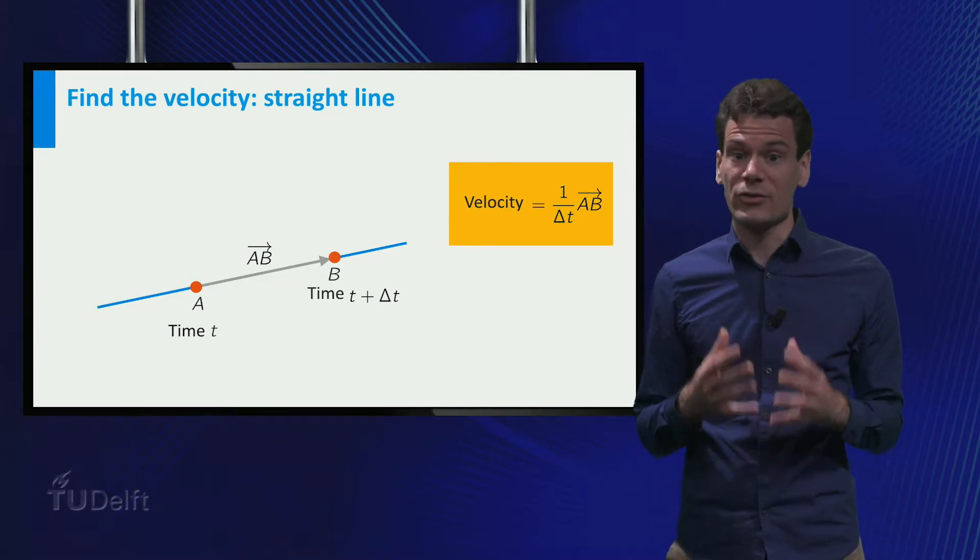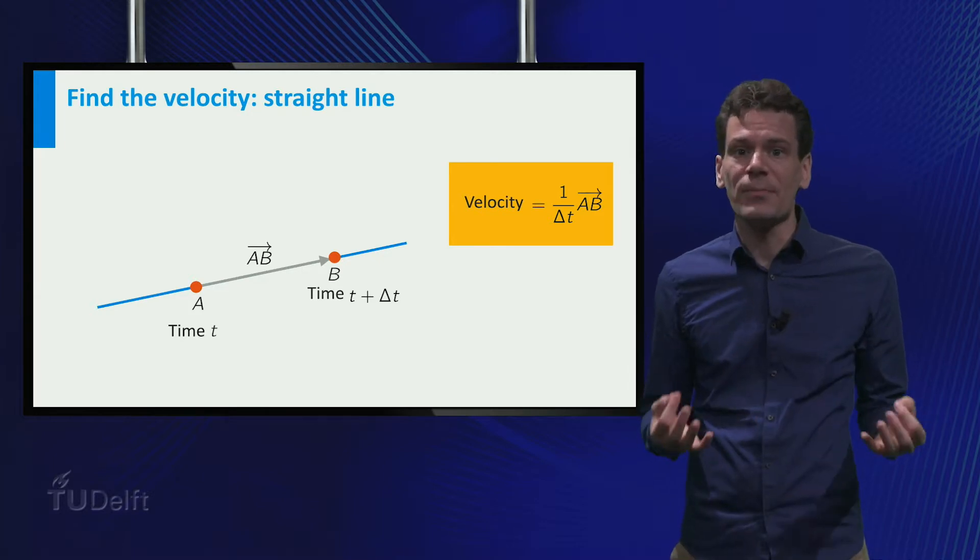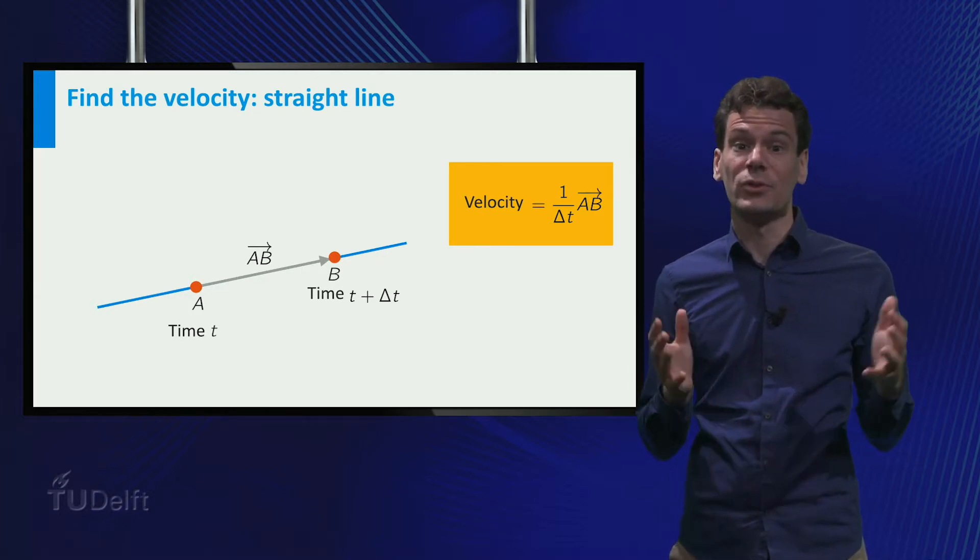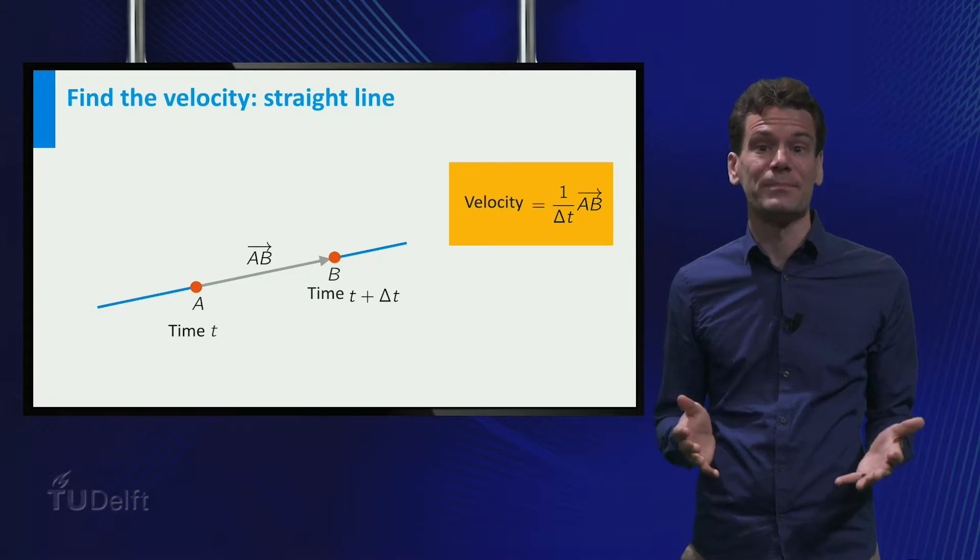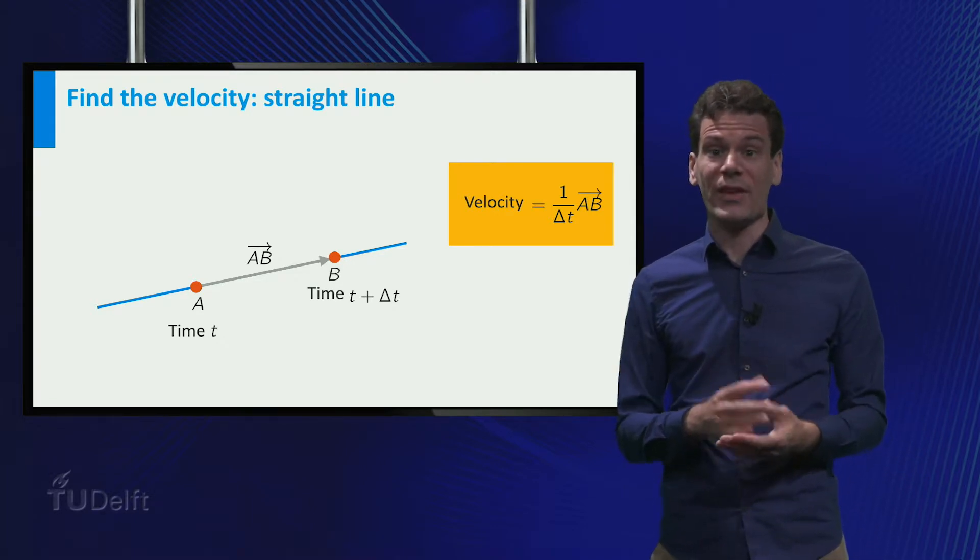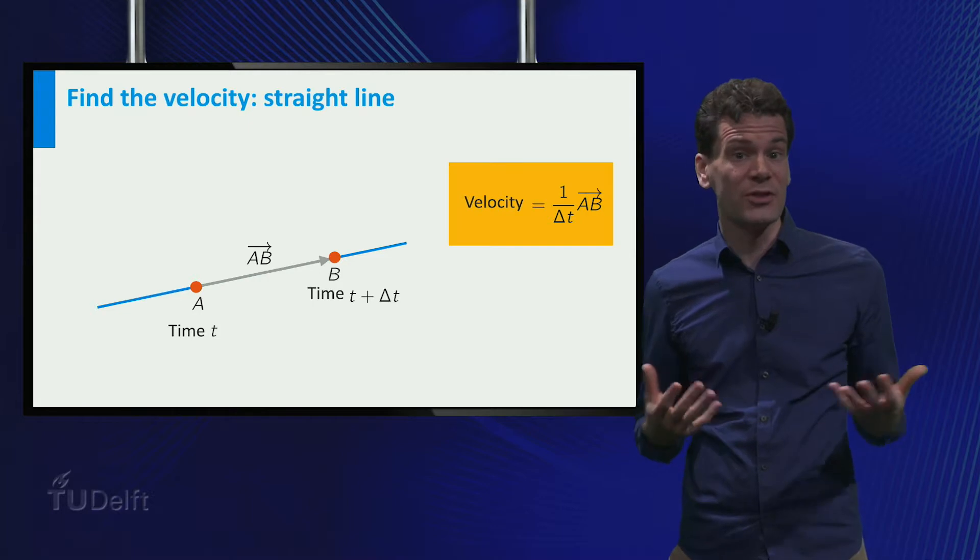Since we assumed constant speed and straight line of motion, it does not matter how large we take Δt. The resulting velocity vector is the same. Now what if the path is not a straight line and the speed is not constant?